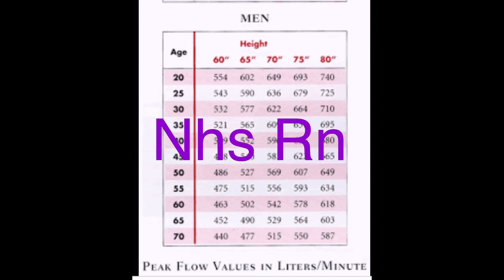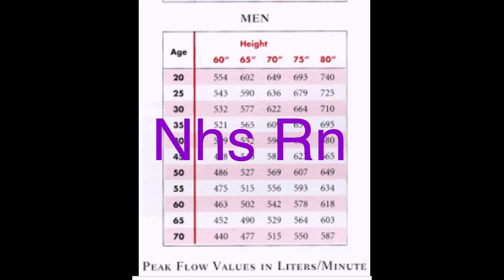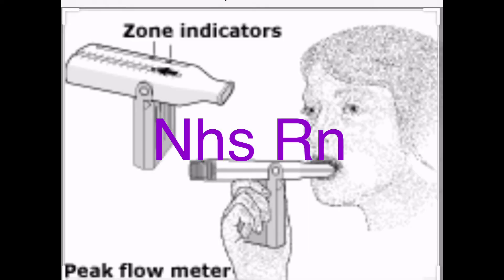Next, ask the patient what their best peak flow recording is. The patient may tell you, or you can check their documents. If you can't find it and the patient doesn't know, you will need to calculate it — usually calculated using the patient's age and height.